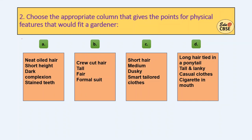Now the next one: which column gives physical features that would fit a gardener? Option A1: neat oiled hair, short height, dark complexion, and stained teeth. Option B: crew cut hair, tall, fair, formal suit — ruled out. Option C: short hair, medium, dusky, smart tailored clothes — ruled out. Option D: long hair tied in a ponytail, tall, casual clothes, cigarette in mouth — ruled out. A gardener would not have a cigarette but would have a beedi, and stained teeth in Option A shows the effect of a beedi. So A is the answer.